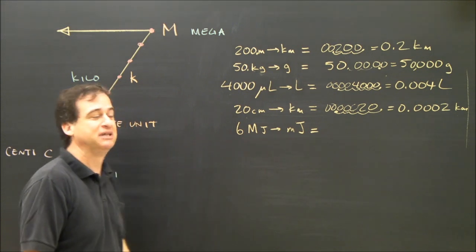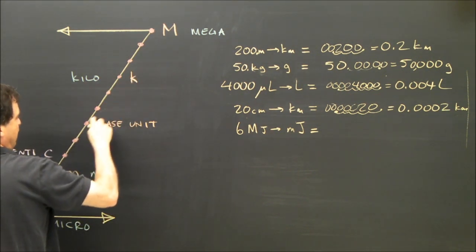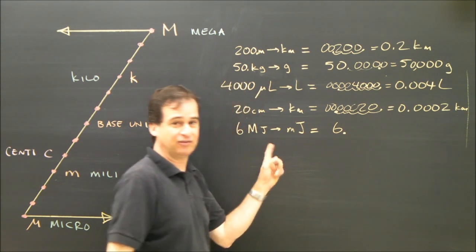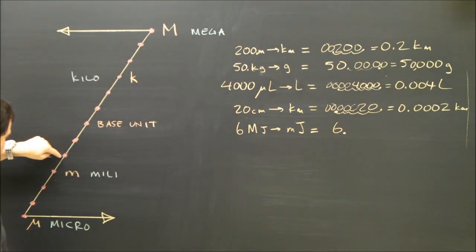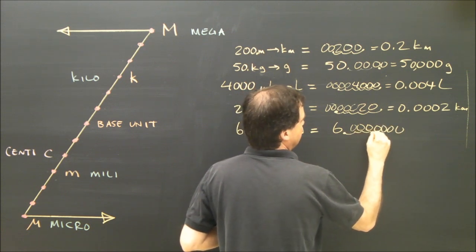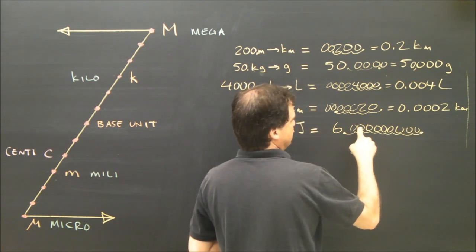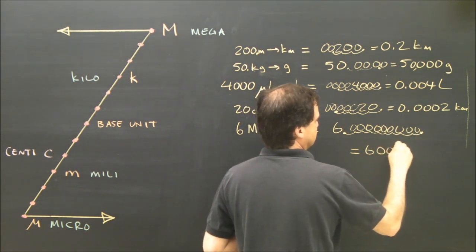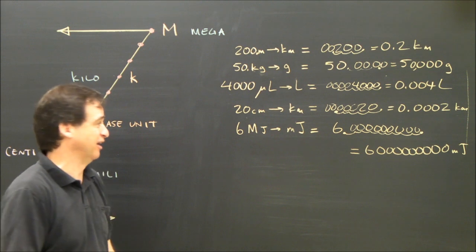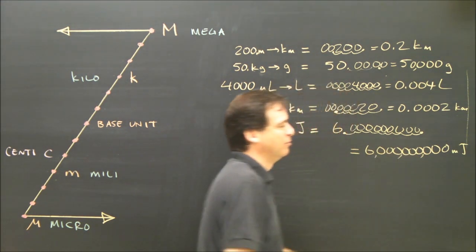Let's try megajoules to millijoules. Mega is at the top and milli is near the bottom, so the decimal is really going to move. Counting down from mega to milli is nine steps, so the decimal moves nine places to the right. Starting with 6, moving nine places to the right gives 6,000,000,000 millijoules. You wouldn't normally want to do that in a question, but six megajoules is that many millijoules.